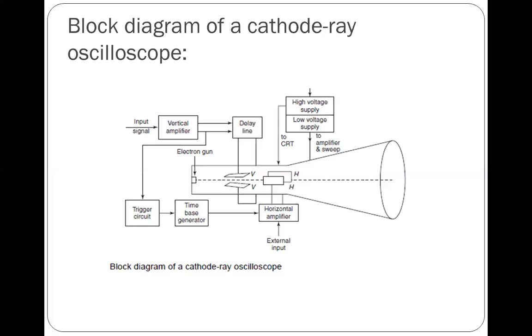The horizontal amplifier is fed with a sawtooth voltage. It amplifies the sawtooth voltage before application to the sweep or time-based generator, which produces sawtooth voltage waveform used for horizontal deflection of the electron beam.